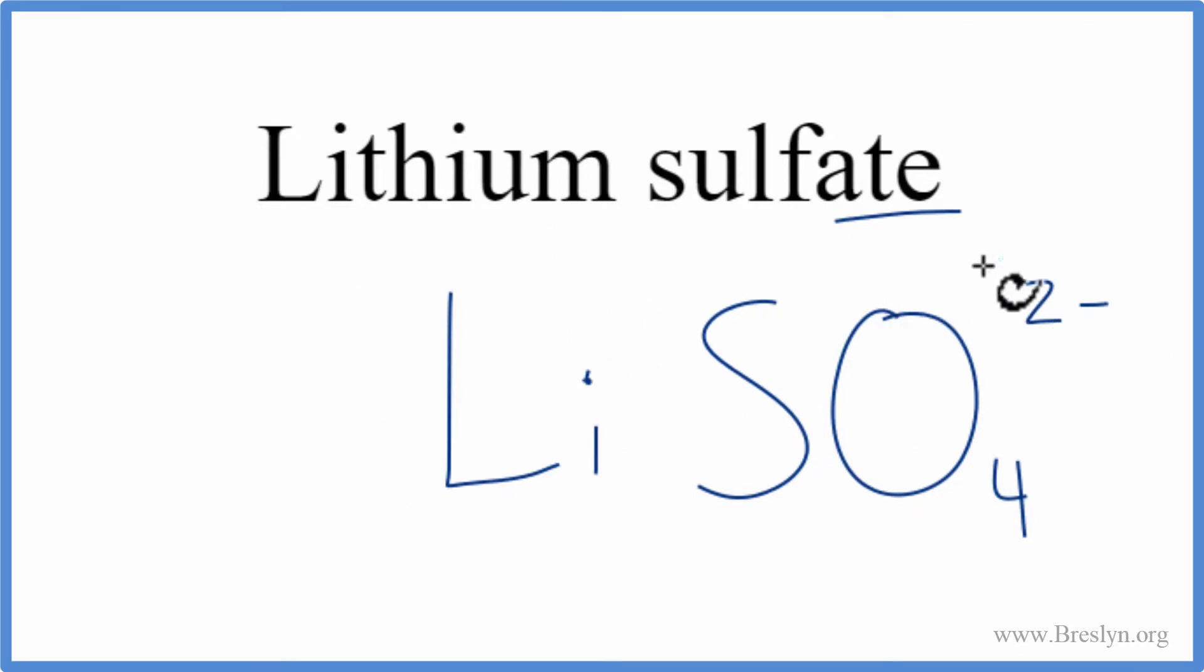Lithium is a metal, and sulfate is made up of nonmetals. So we have a metal and nonmetals. This is an ionic compound.